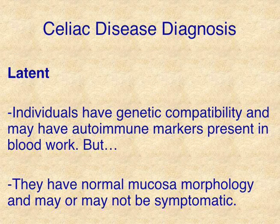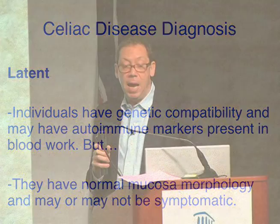The latent form is when they are genetically compatible, they may have autoimmune markers present in the blood work, but their intestinal mucosa is completely normal, and they may or may not be asymptomatic. So we're starting to get real fuzzy. Where we started off with a nice clean definition — an autoimmune process associated with genetic susceptibility and exposure to gluten — now we're a bit fuzzy in terms of making this diagnosis, and we're seeing that a huge percentage of people actually have the disease or at least a predisposition to it, who are either not manifesting it or have been missed in terms of diagnosis.